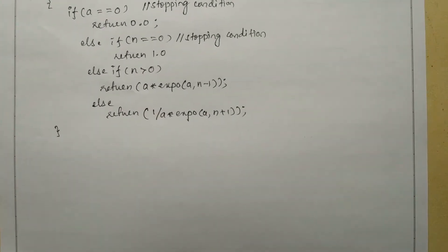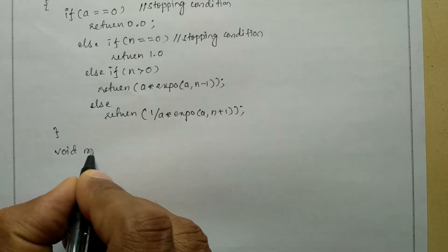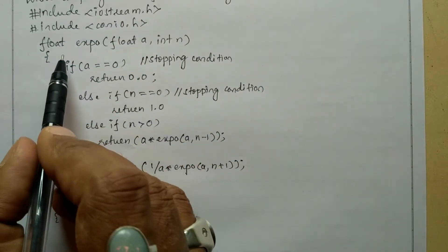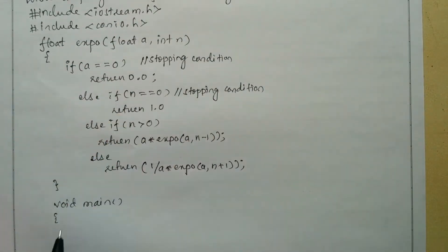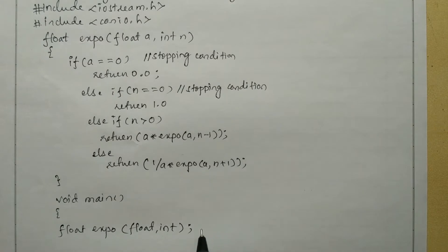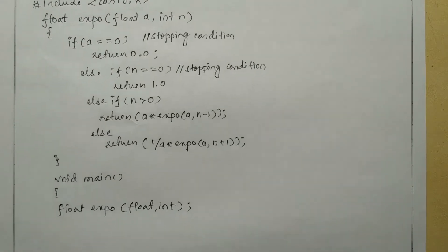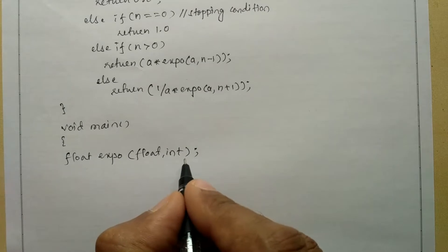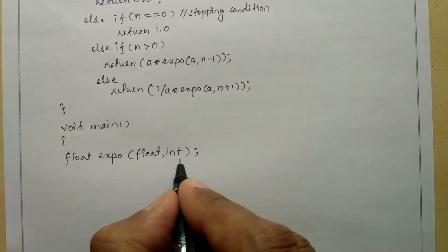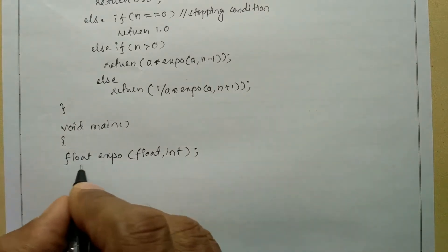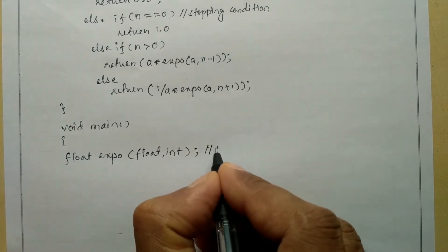Now I'm going to write the main function: void main with a curly open brace. Here I'll declare the function prototype — float expo(float, int) with a semicolon. Just as we declare variables before using them, we declare a function before defining it. This creates an interface for the compiler to locate the function definition.